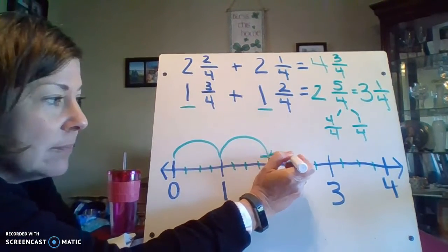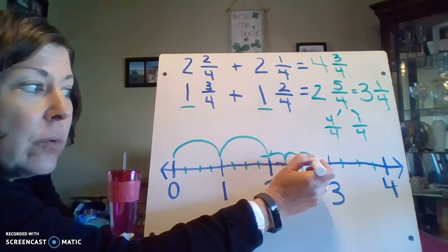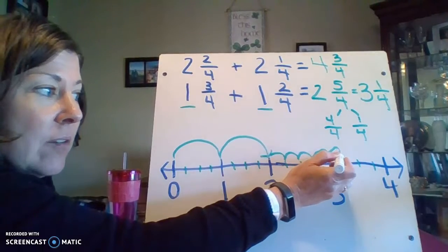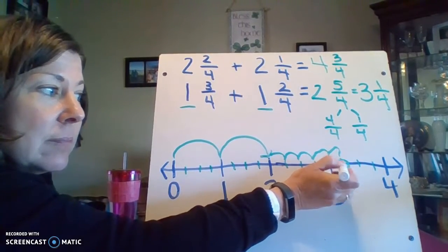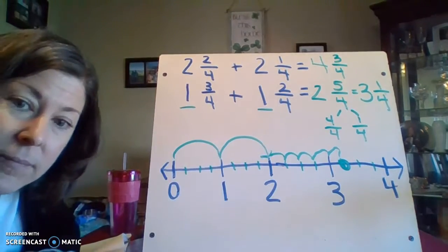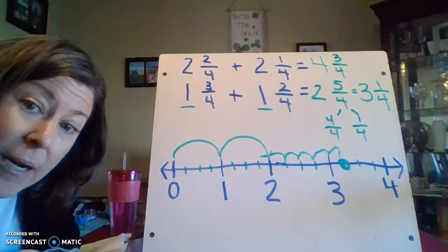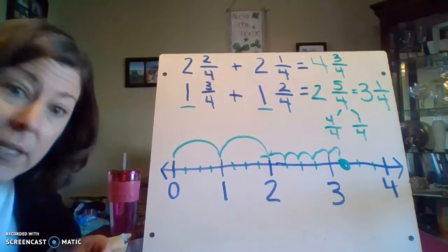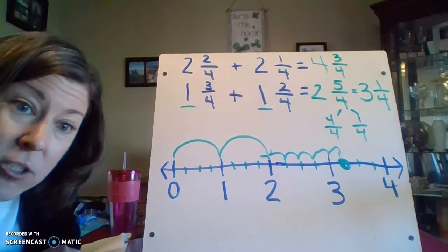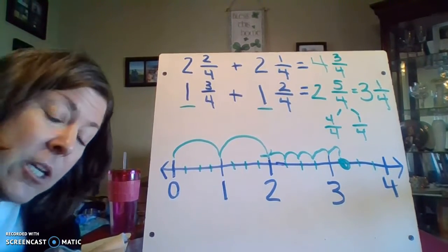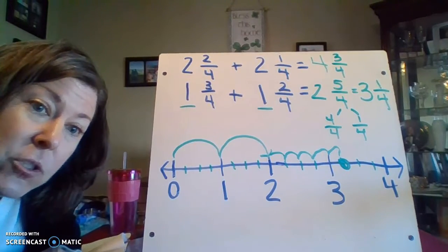So now I'm going to go an additional five-fourths. One, two, three, four, five. And where do I end up? I ended up at three and one-fourth, which was my answer when I originally added. So now we're going to do a few examples together.